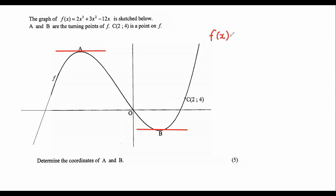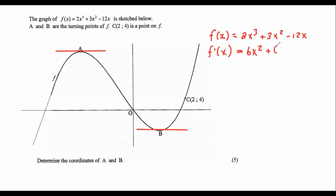So we write down the original equation, then we take the first derivative. Some students call it the first 'derogative' and some really interesting things, but it's the first derivative. When we take the first derivative, that's going to give us 6x² + 6x − 12.